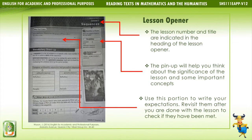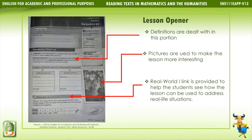Lesson opener: The lesson number and title are indicated in the heading of the lesson opener. The pinup will help you think about the significance of the lesson and some important concepts — use this portion to write your expectations and revisit them after you are done with the lesson to check if they have been met. Definitions are dealt with in this portion. Pictures are used to make the lesson more interesting, and a real-world link is provided to help students see how the lesson can be used to address real-life situations.